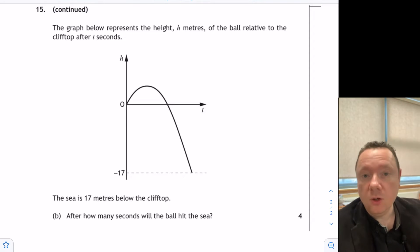Part B: the graph below represents the height of the ball relative to the cliff top after t seconds. The sea is 17 meters below the cliff top. After how many seconds will the ball hit the sea? Have a look, see if you can solve that.